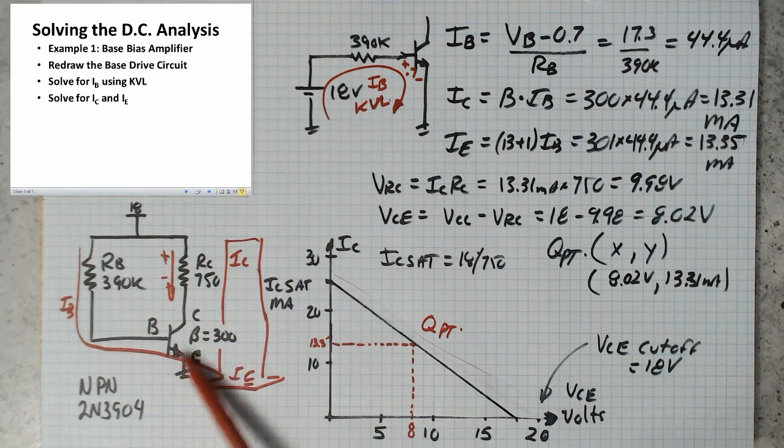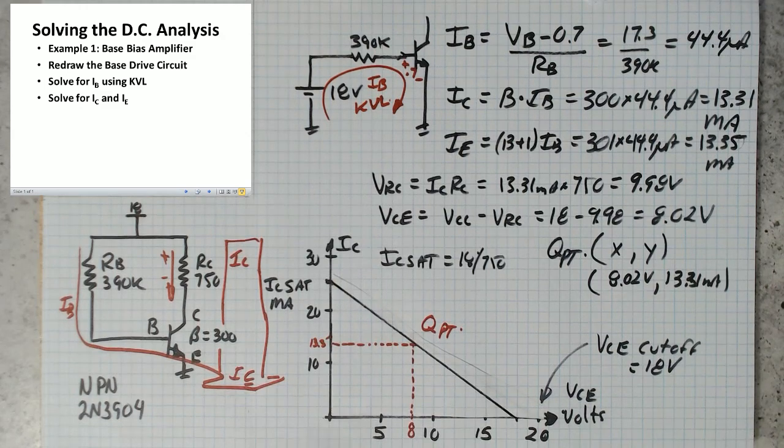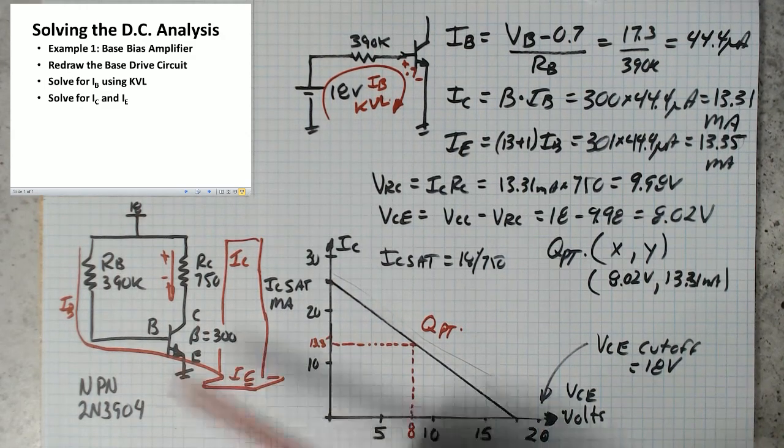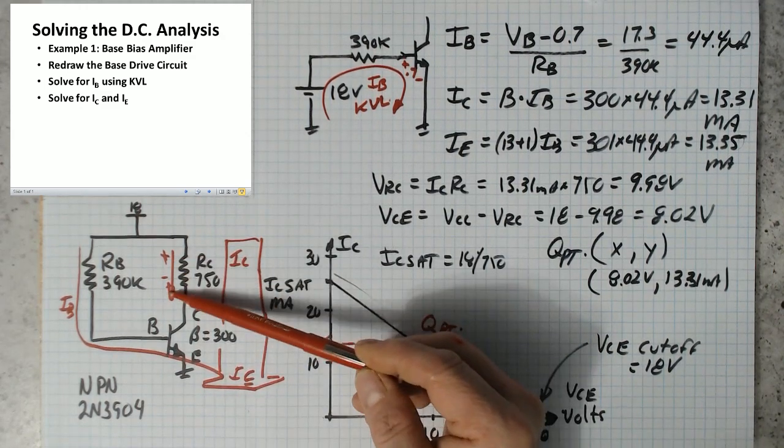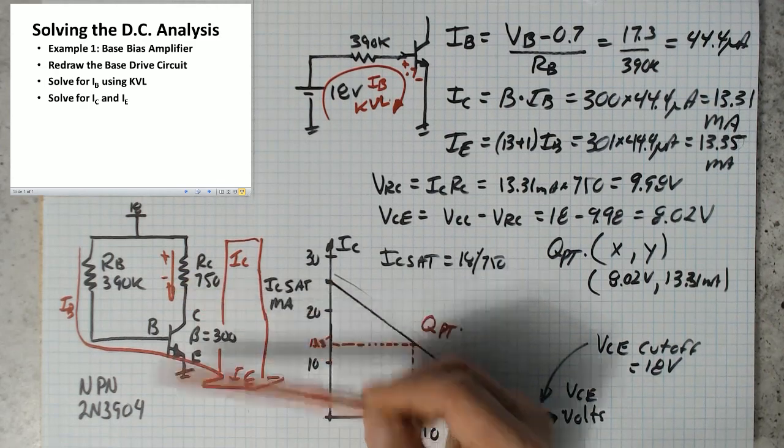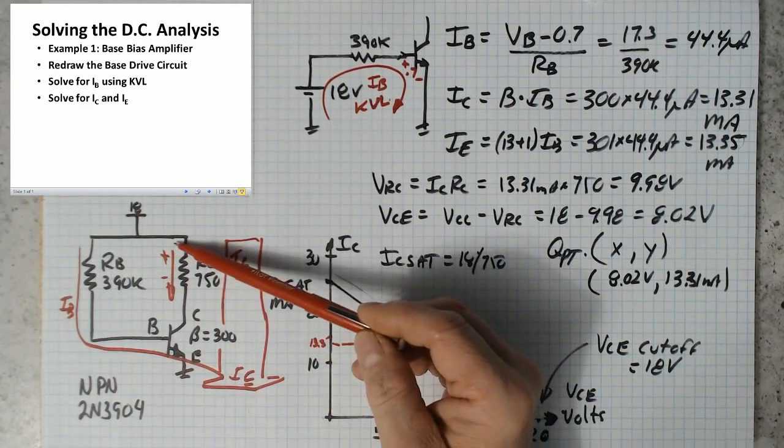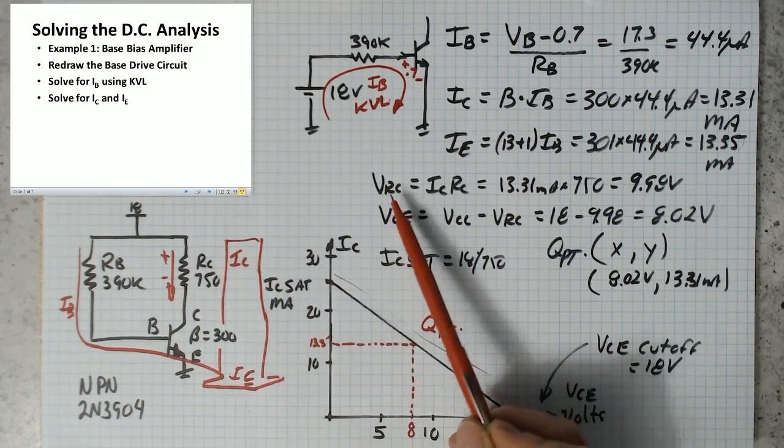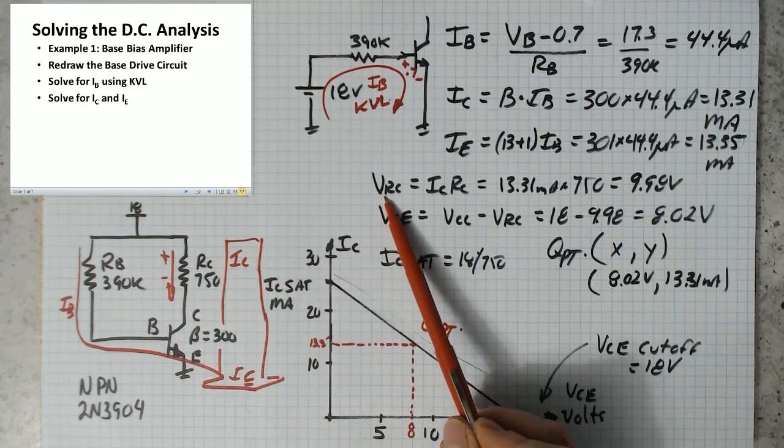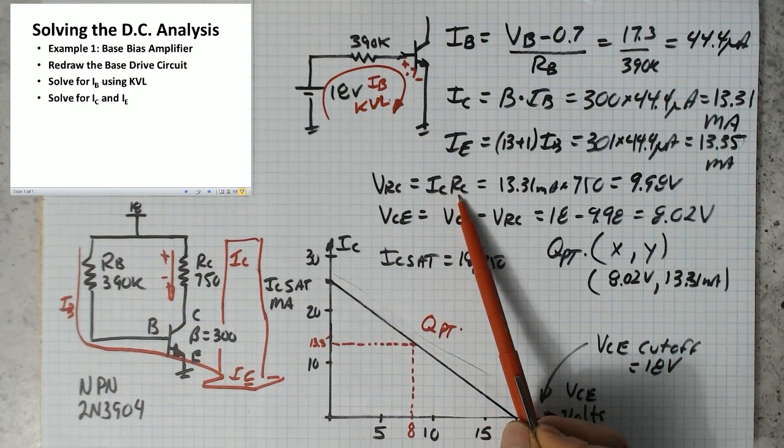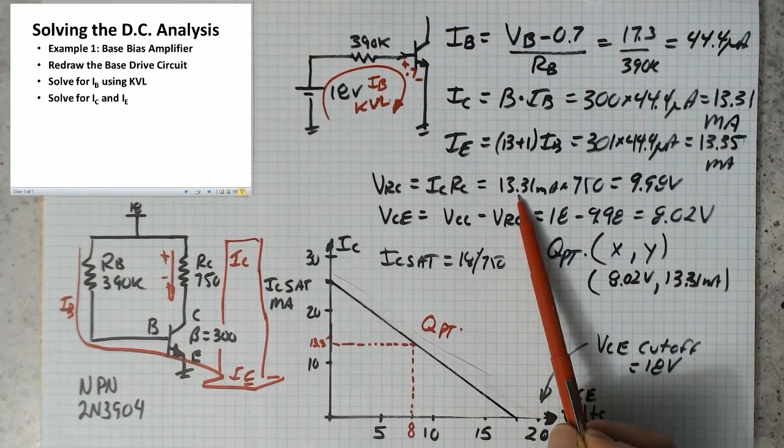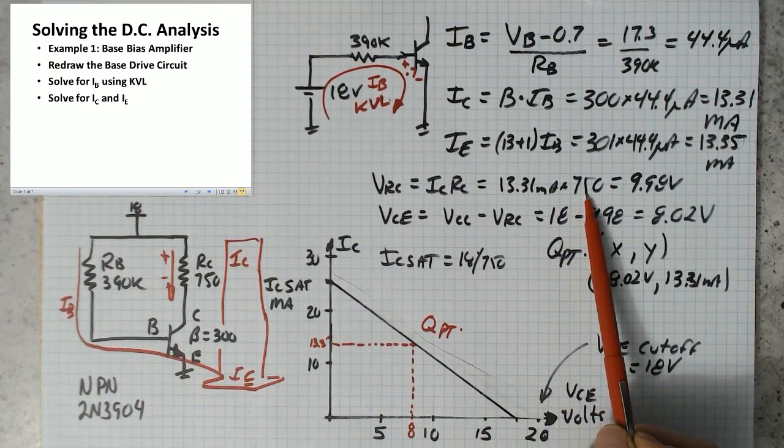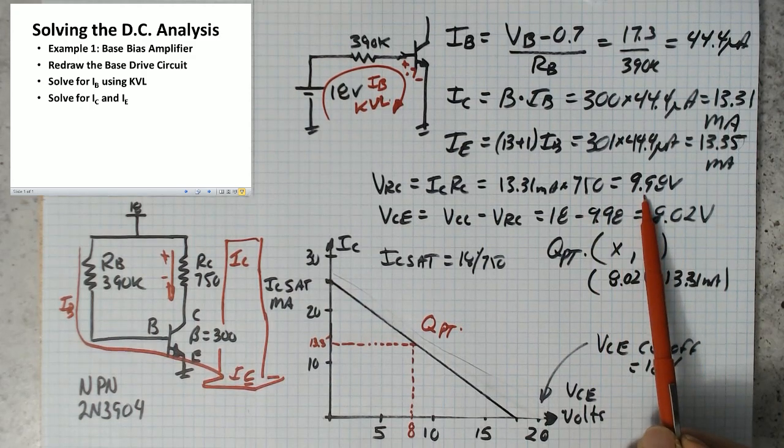Now that we've got all of the currents in the circuit, we know how much is going down here and how much is going down here, we can solve for the voltages. And one of the voltages that we want to solve for is the voltage across this resistor. So we know how much current is going down through here. That's IC and we know its value so we can say the voltage across that resistor, which is ICRC, 13.3 milliamps times 750 ohms, gives us 9.98 volts.